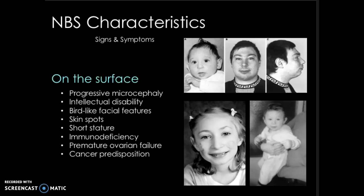Distinctive facial features commonly seen in patients with NBS are described as bird-like and become more obvious with age. They typically include a sloping forehead, large ears, small jaw, and prominent nose. Café au lait spots — flat, pigmented birthmarks — are very common, as well as conditions causing the loss of skin color and blotch-like patterns.